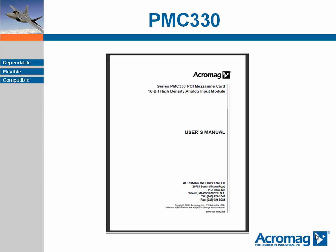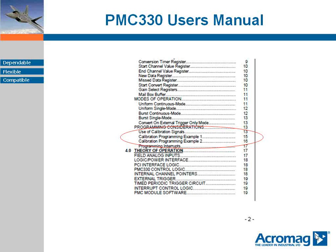The user's manual is available for download from our website. It is important to go to the user's manual rather than the product data sheet for this level of detail. In all of our analog to digital and digital to analog modules in industry pack PCI, compact PCI, and PMC form factor, you will find a similar section to the one circled indicating calibration with some examples.